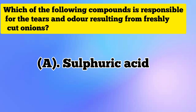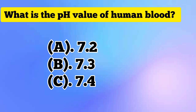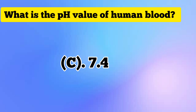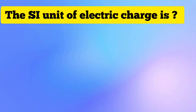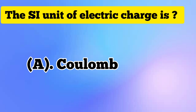Sulfuric Acid. What is the pH value of human blood? Answer: 7.4. The SI unit of electric charge is? Answer: Coulomb.